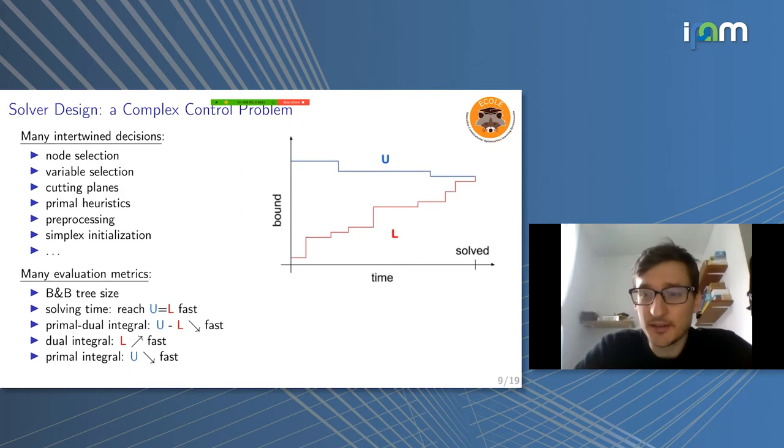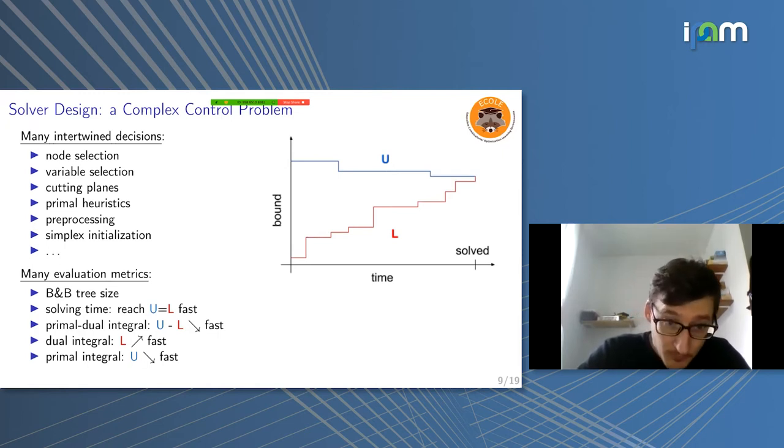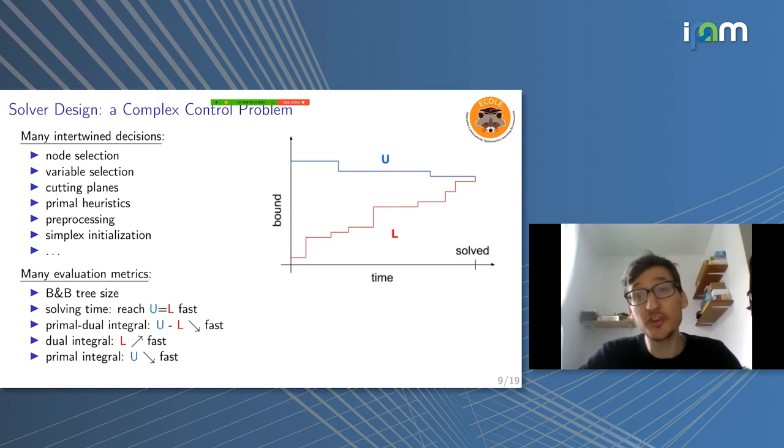And to make things even harder, there is no clear objective way to evaluate a solver. There are many metrics in the literature. People look at the branch and bound tree size. You like to have it small, but also the solving time. But maybe for some instances, you cannot even solve them. So solving time is meaningless. So you can look at the primal dual integral, how fast you close the gap. Maybe you just care about the dual part, about proving optimality. Maybe you just care about having good feasible solutions first, in which case you only look at the primal integral. All of those are valid metrics, and there is no consensus really in which one is best.